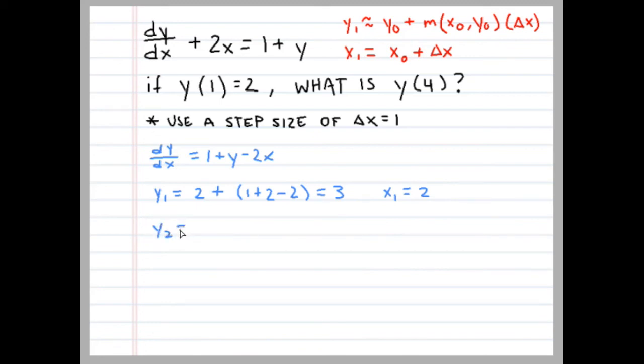And y₂ equals, and now we're going to take the last point that we found and evaluate it. So the last point we found was 2, 3, and now we're going to use that point in the next step of Euler's method. So y₂ equals 3 plus 1 plus 3 minus 2 times 2 is equal to 4, and that equals 3. So y₂ equals 3, x₂ is, we're going to add another step, so that equals 3. And our new point is 3, 3.